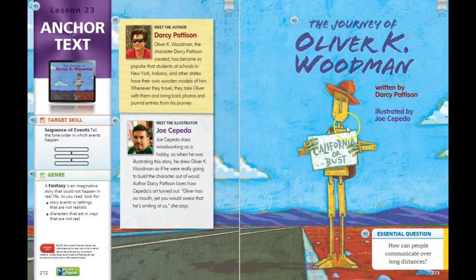We have that sequence of events flow chart here that tells the time order that events happen in the story. This genre is fantasy — it's an imaginative story that could not happen in real life. The Journey of Oliver K. Woodman is about a wooden figure that travels across the United States. The people in the story treat Oliver as if he speaks and acts like a person, and some events could not happen in real life.